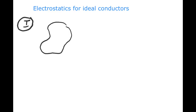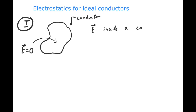We're going to look at a number of cases. Case one: here is an ideal conductor of arbitrary shape. An interesting thing you can say is that when looking at electrostatics, the electric field inside this ideal conductor must be zero. When I say conductor, I'm assuming it's ideal. So the electric field inside a conductor must vanish.